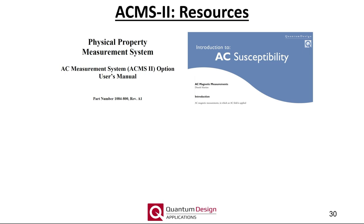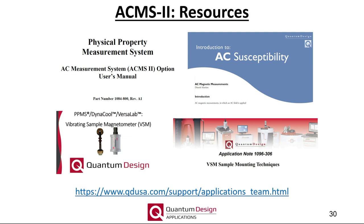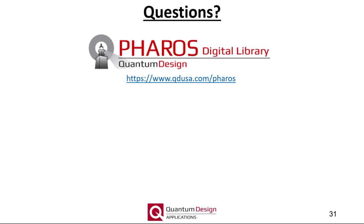In addition to this webinar, there are many other resources available. Specific to the ACMS2 option are the manual and aforementioned application notes. As there is a lot of crossover between the ACMS2 and VSM options, I encourage you to also utilize the VSM webinar and sample mounting application notes. All of these resources can be found on the applications page of the qdusa.com website. I would also like to remind you of our digital online database, Pharos, which contains a wealth of detailed information regarding our measurement platforms and options, including example sequences, application seminars, and the application notes mentioned in this webinar. Current Quantum Design customers can sign up for a Pharos account at the website indicated.